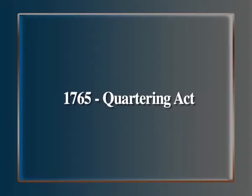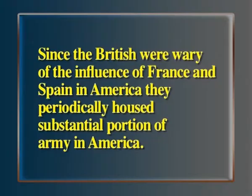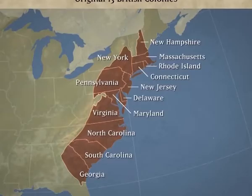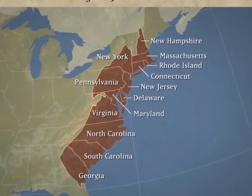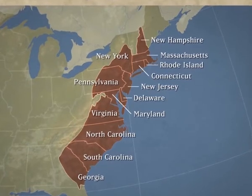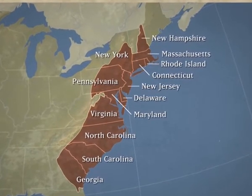1765: The Quartering Act. Britain ordered that colonies were to house and feed British soldiers if necessary. Since the British were wary of the influence of France and Spain in America, they periodically housed a substantial portion of the army in America. This order placed considerable direct economic strain on the colonies.